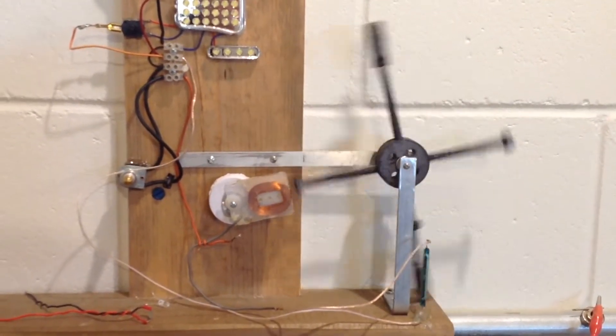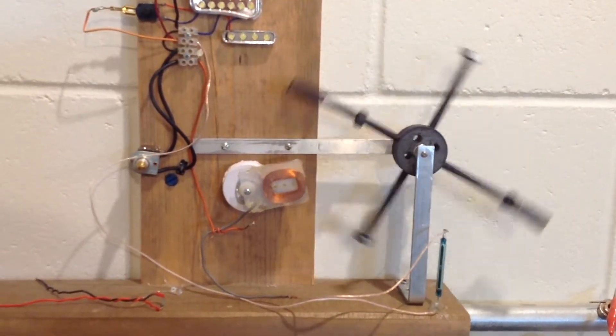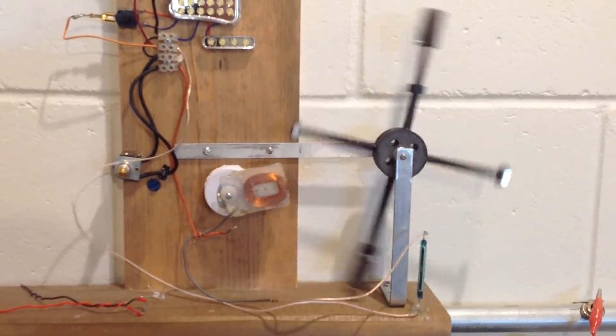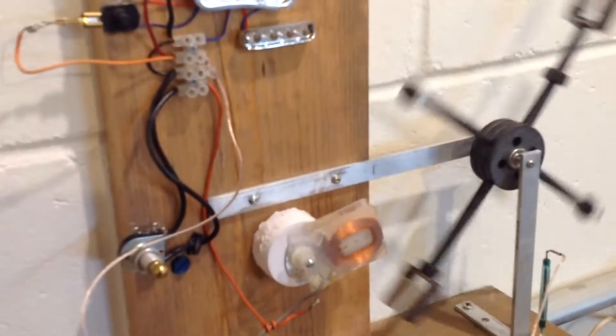The threaded spokes and the nuts are used to balance the rotor. And on the shorter spokes magnets have been attached to the nuts to activate the reed switch when they come close.